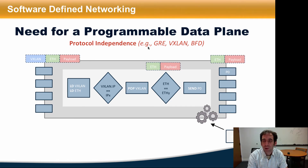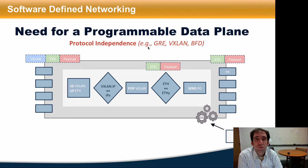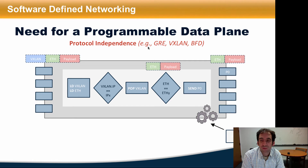For example, the policy shown here tells the data plane to read VXLAN and internal Ethernet headers from the packet, compare the IP in VXLAN with some IPX, and if there's a match, it removes the VXLAN header and internal Ethernet headers from the packet and forwards it through port 0, if the internal ETH header matches.